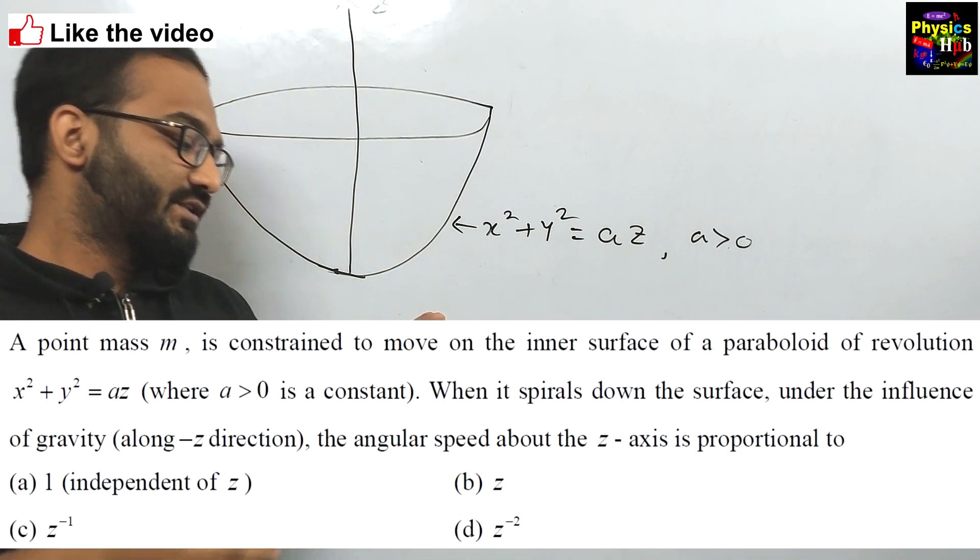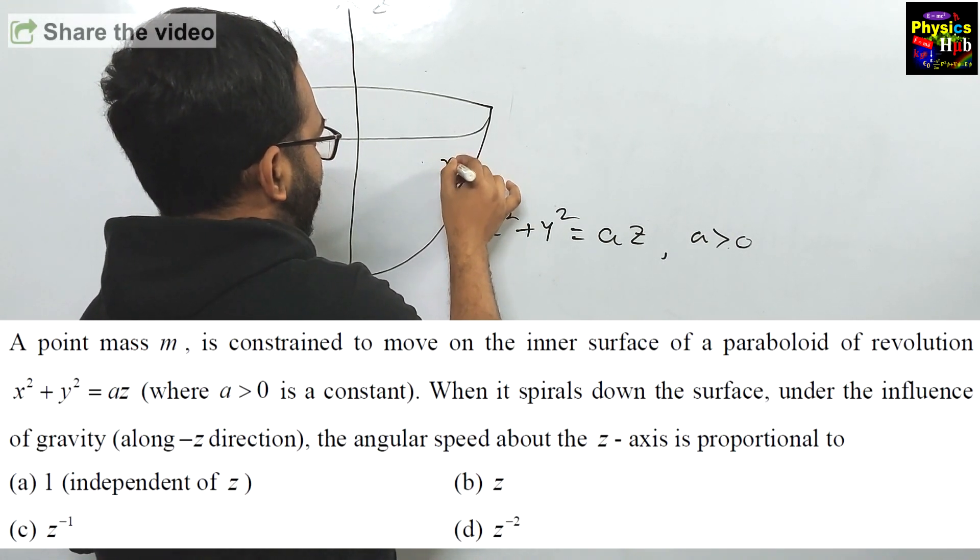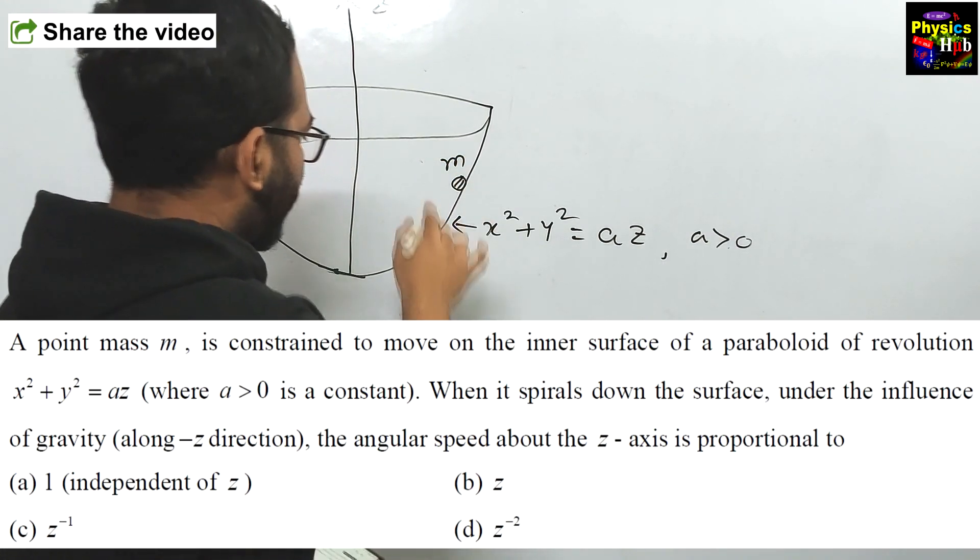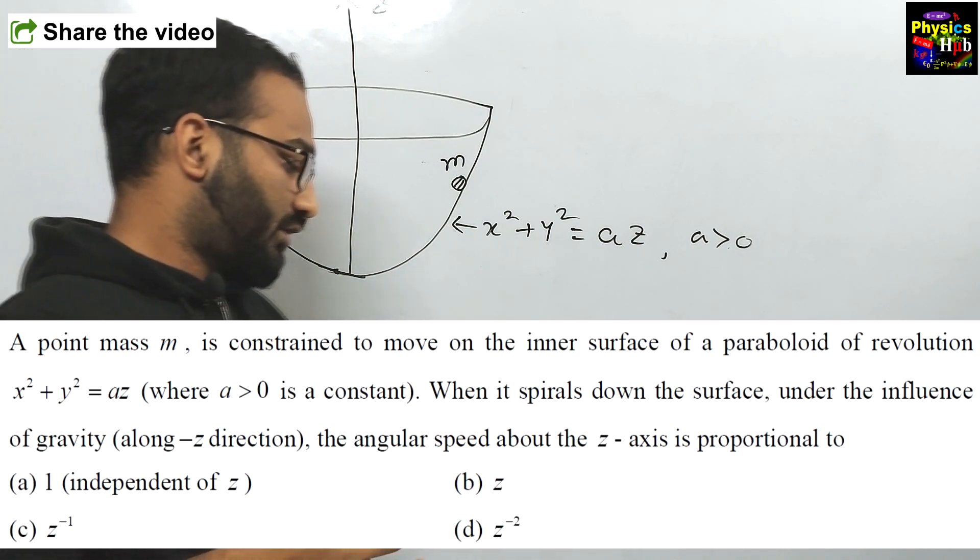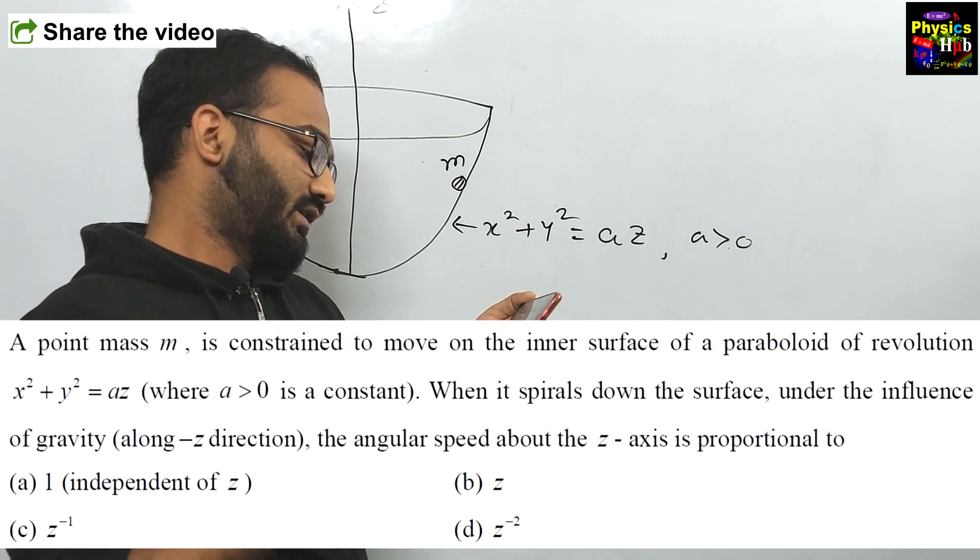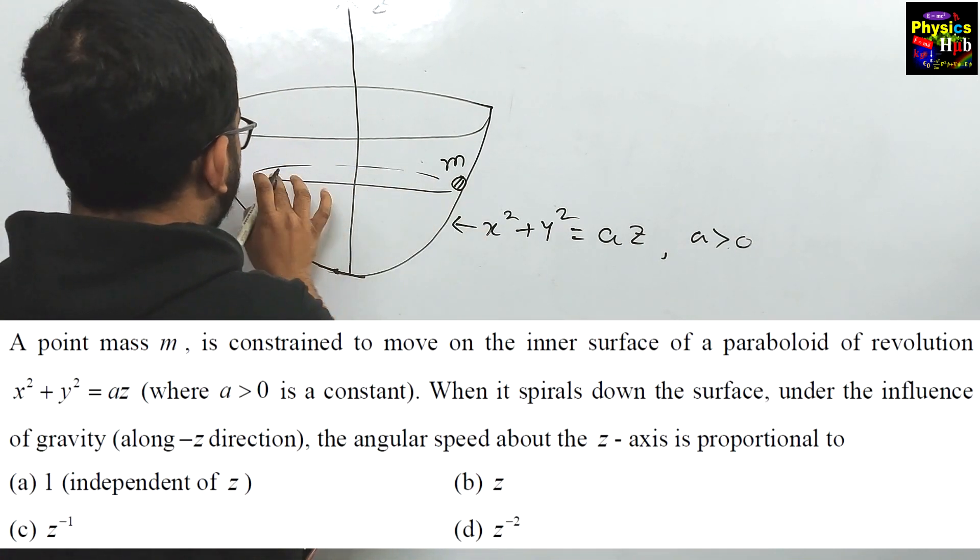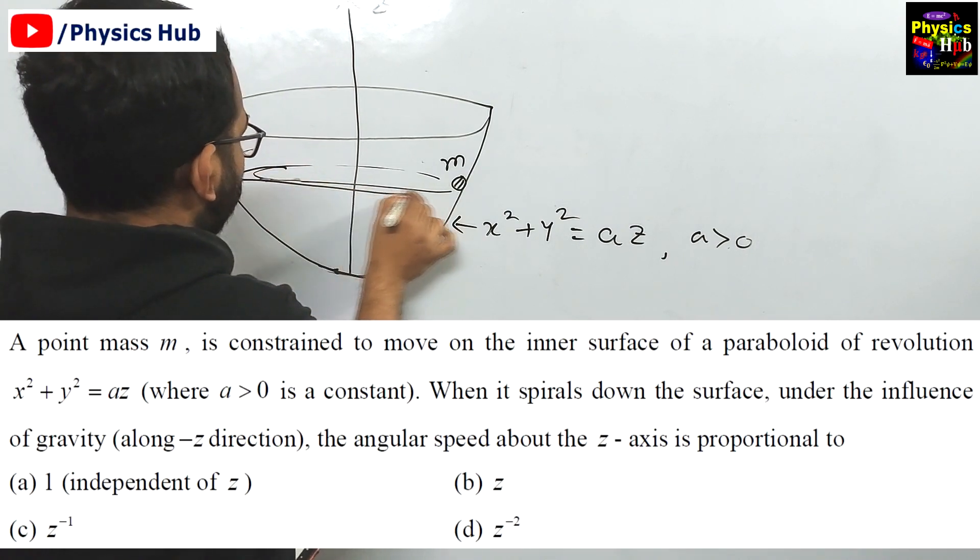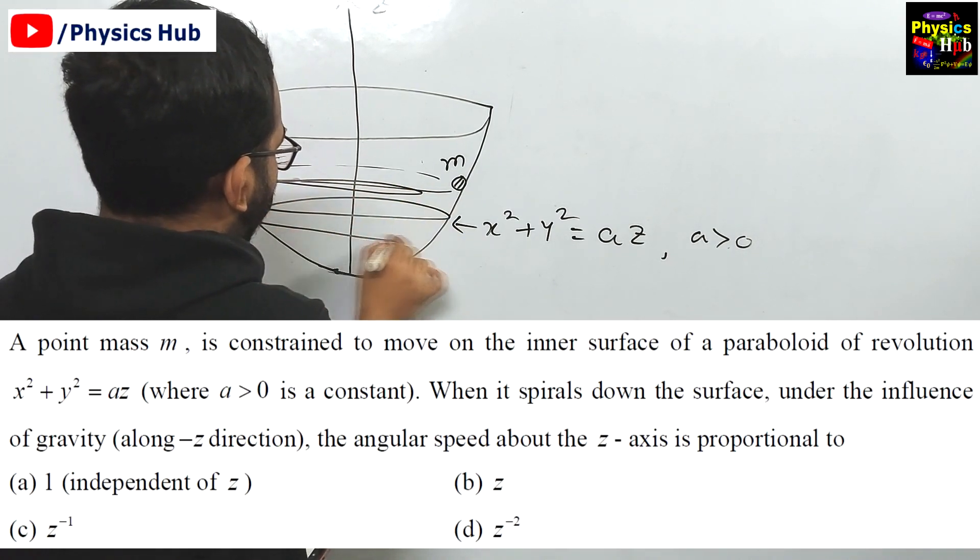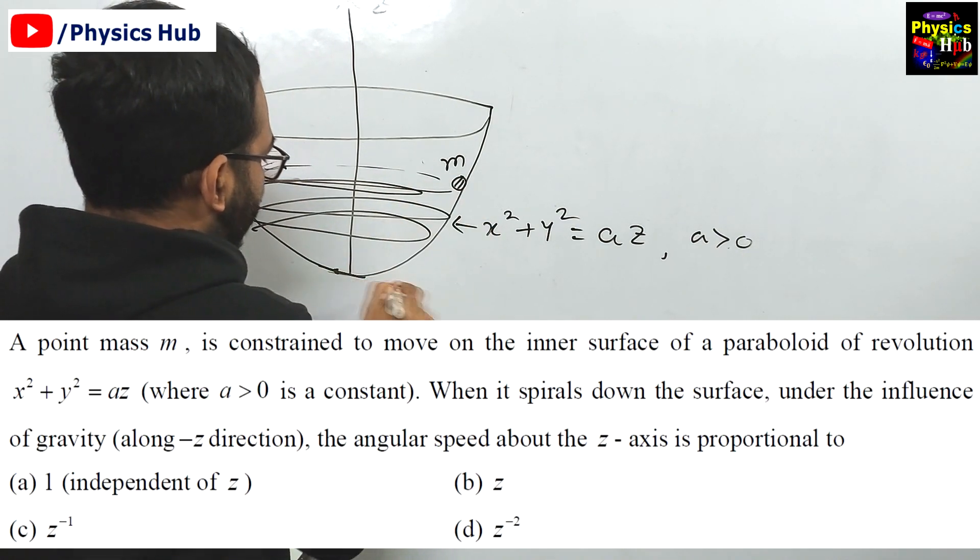Point mass m is constrained to move on the inner surface of the paraboloid. Let us say this is a point particle m and it is moving in the inner surface. When it spirals down the surface under the influence of gravity along negative z direction, spirals down means you can say it is like this, along the negative z direction. It is moving and slowly coming down to negative z direction.